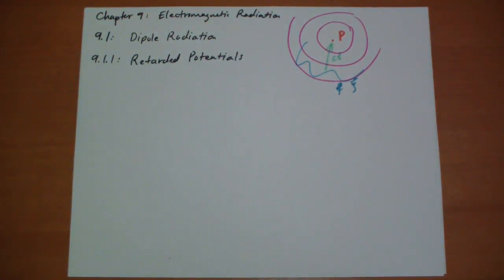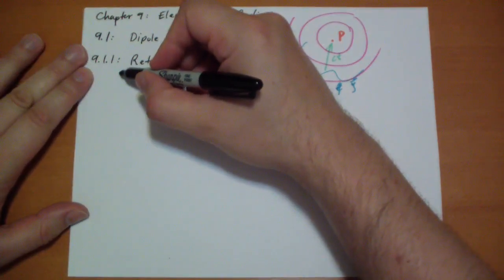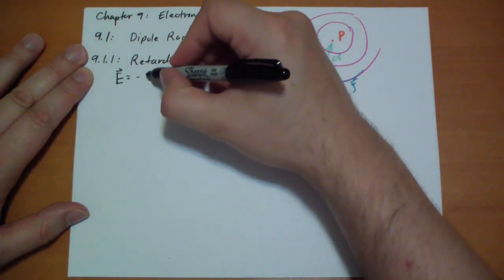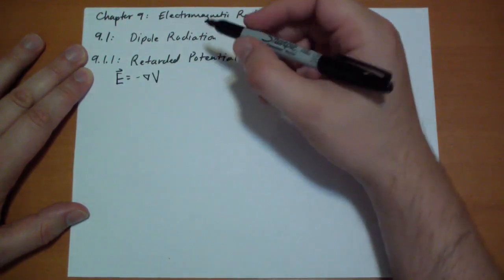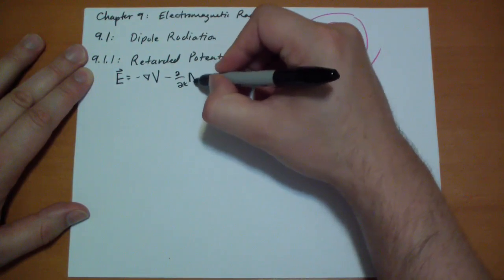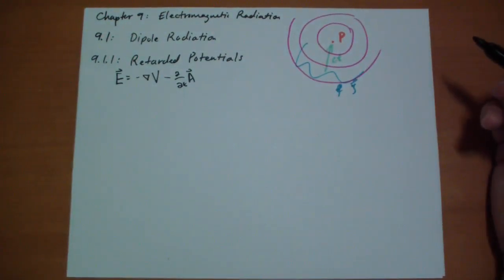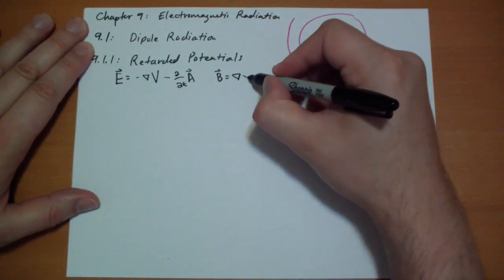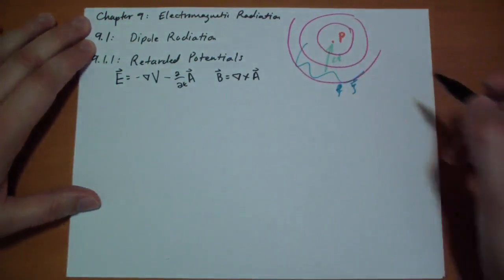We're going to start with some stuff that we learned in section 7.4.1. The basic equations for how you calculate the E-fields and B-fields given potentials. The E-field is simply minus the gradient of V minus the time derivative of the A-field, the magnetic potential. And the B-field is simply the curl of the A-field.